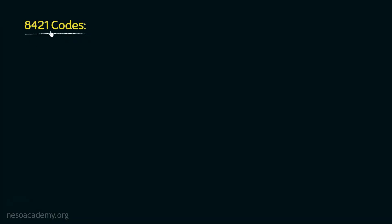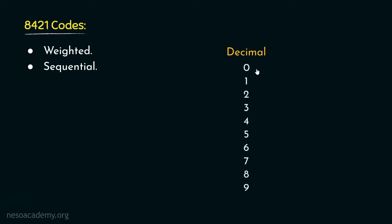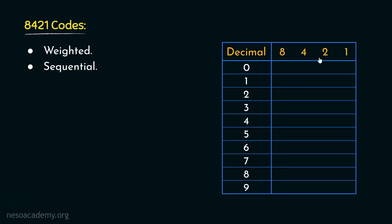For 8421, as the name suggests, these are weighted. Also, these are sequential. Now we all know that in case of decimal there are 10 symbols. In the study of Numeric Codes, we will basically learn about how to encode all the symbols of decimal in the respective Numeric Codes using their own encoding techniques. Let's see how the encoding works for 8421.